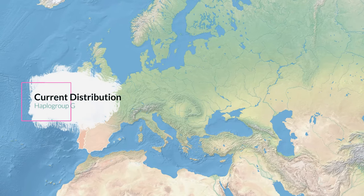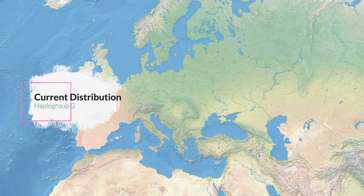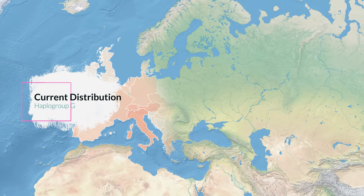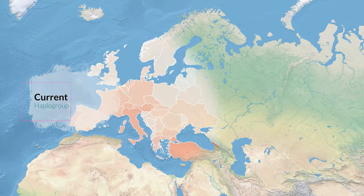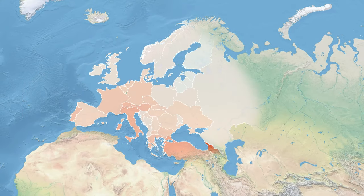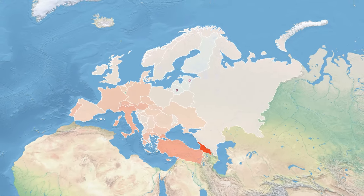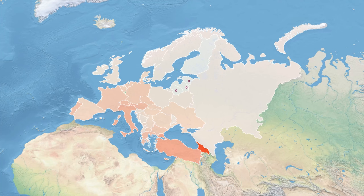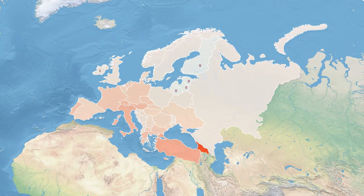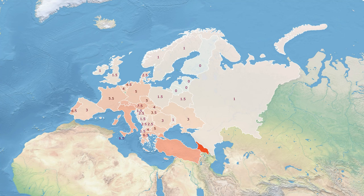Nowadays Haplogroup G is found all the way from Western Europe and Northwest Africa to Central Asia, India, and East Africa, although everywhere at low frequencies, generally between 1 and 10% of the population. The only exceptions are the Caucasus region, Central and Southern Italy, and Sardinia, where frequencies typically range from 15% to 30% of male lineages.